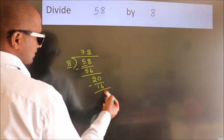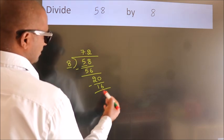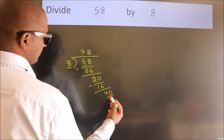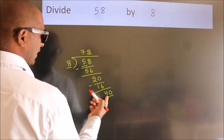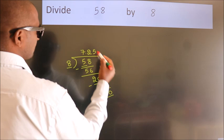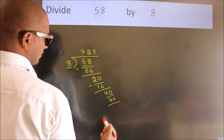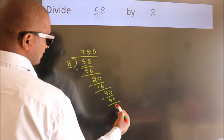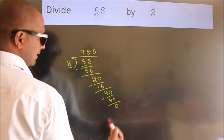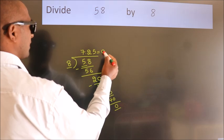After this, we already have the decimal. So directly take 0. So 40. When do we get 40 in 8 table? 8 times 5, 40. Now we subtract, we get 0. Here we got remainder 0. So this is our quotient.